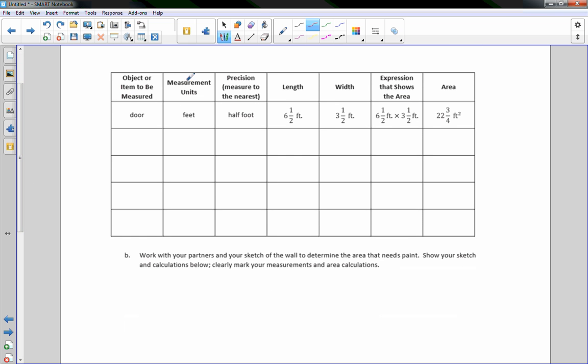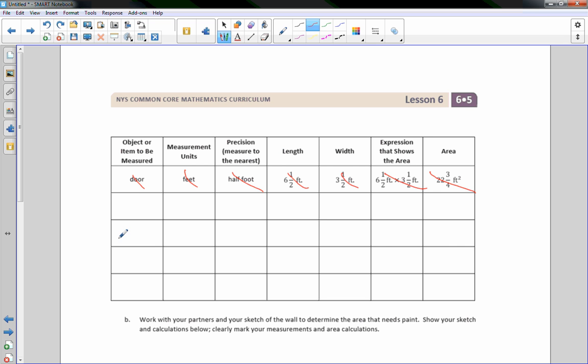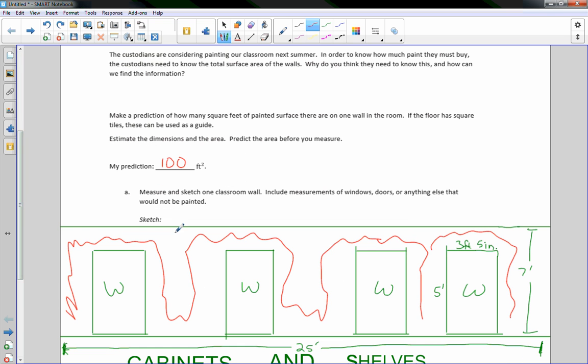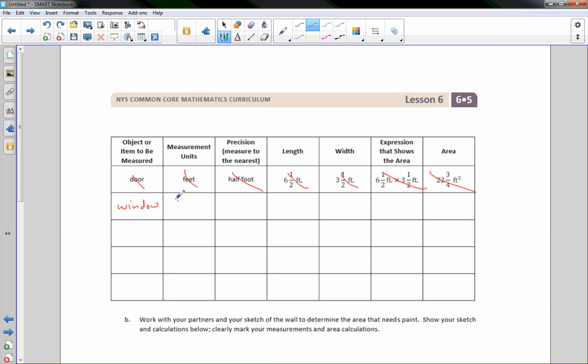So it says objects or items to be measured. Measurement units feet. Precision measure to the nearest half foot. So we're not going to use these. I don't have a door. So I'm going to cross this out. We're just going to do what we have here. So an object that I needed to measure was a window. And the window was three feet five inches by five feet. And it says measurement in units. And we're going to use feet. And precision measure to the nearest half foot. So we are going to say these things here. All right. So we're going to measure to the nearest half foot.